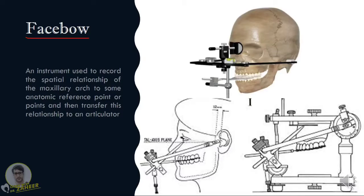Facebow is an instrument that is going to help us achieve this objective. Facebow is nothing but an instrument that is used to record the relationship of the maxillary arch to some anatomic reference point or points, and then transfer this relationship to an articulator. Let us try to decode this definition. What it says is that there are some anatomic reference points — mostly two posterior reference points on either side and one anterior reference point — and these three reference points will help us achieve the spatial relationship of the maxilla with respect to the terminal hinge axis or the base of the skull.